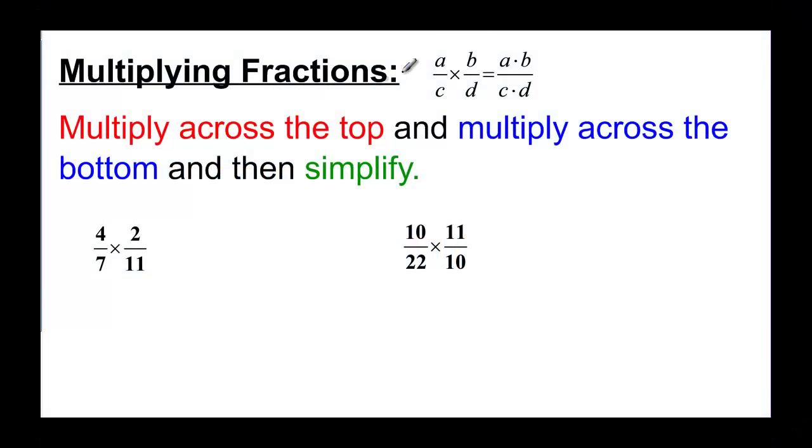So when we multiply fractions, we're just going to multiply straight across the top and straight across the bottom, and then we'll simplify if we need to. We'll also talk about the fact that sometimes we can simplify before we multiply if the numbers are kind of big.